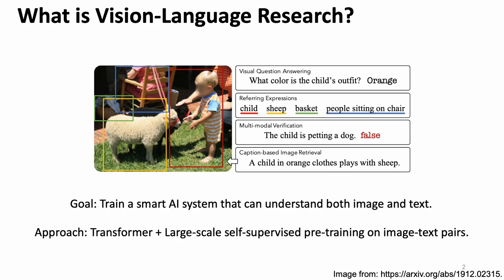The goal of vision-language research is to train a smart AI system that can understand both image and text. Here we show some popular vision-language tasks. Visual question answering is one of the most famous tasks, which needs to answer a question based on the input image. Since 2019, with the help of large-scale self-supervised pre-training on image-text pairs, transformer-based vision-language models have achieved remarkable progress.